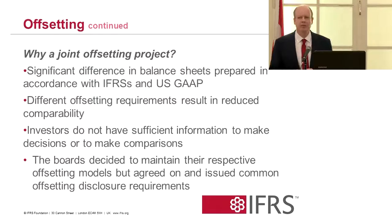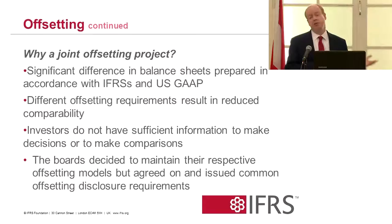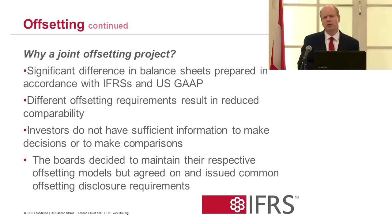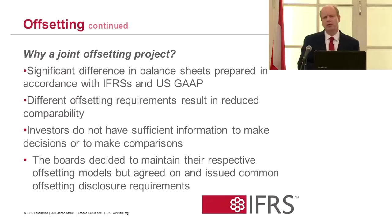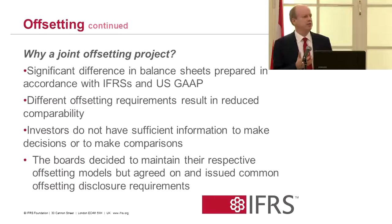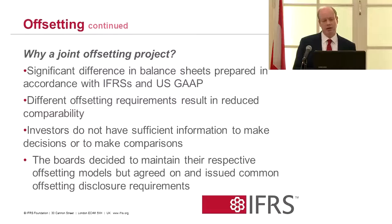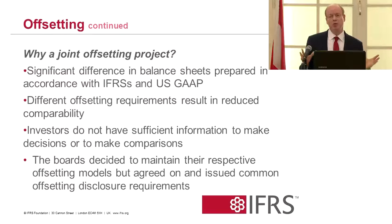Deutsche Bank is an example where it reports under IFRS, but you would find a pro forma US GAAP balance sheet in the back of its accounts, because many of its peers it considers to be American and it wants readers to understand the impact of applying US GAAP. The reason is mainly derivatives, and also a little bit in repos or sale and repurchase agreements, where the rules are a little bit different between the two GAAPs.